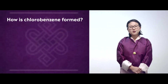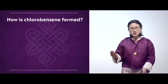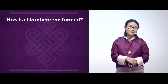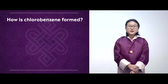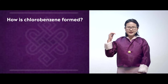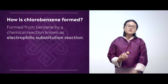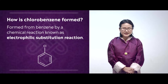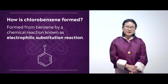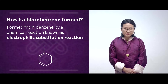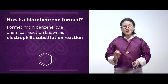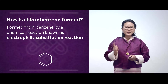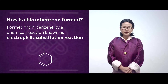How is this chlorobenzene produced or prepared? Chlorobenzene can be prepared from benzene by a chemical reaction known as electrophilic substitution reaction.